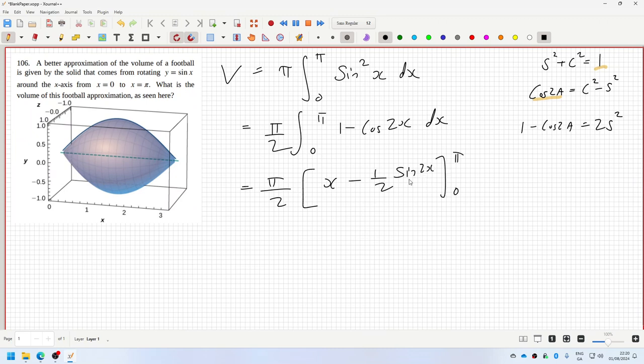That's actually gone, so it's just going to be pi squared over two units cubed.